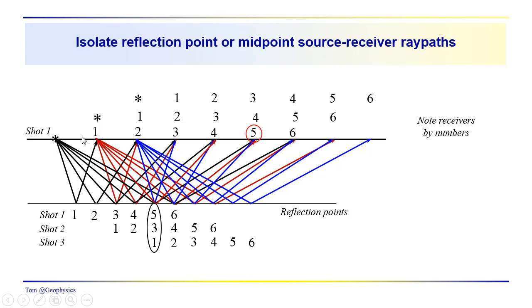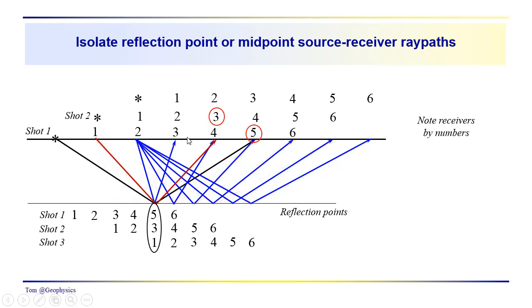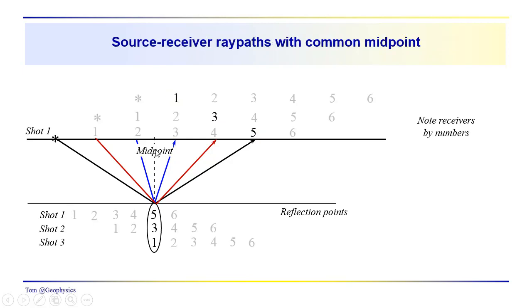You can see where for shot one we have a recording from receiver five, just isolating that reflection. For shot two we have a reflection to receiver three, and we're just isolating that reflection. And then for shot three we have a reflection from the source to receiver one, and isolating that reflection. So we're just looking at the reflection ray paths that provide information about this common reflection point or at a common midpoint. And this is a midpoint. And so probably a safe way to refer to this kind of data is common midpoint rather than common reflection point or common depth point. It's often referred to as common depth point. But if you have a dipping layer that's not the case and we will discuss that later on.